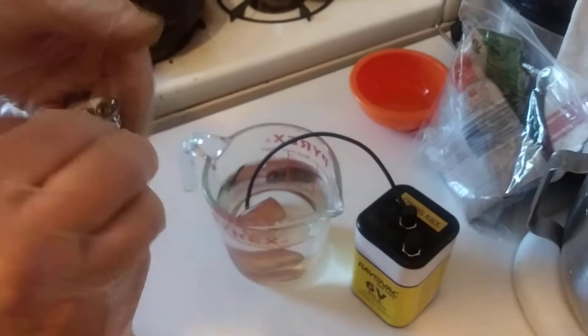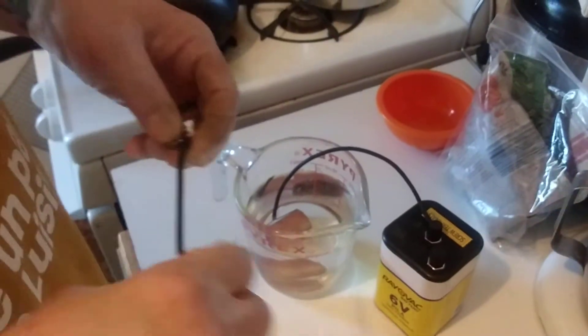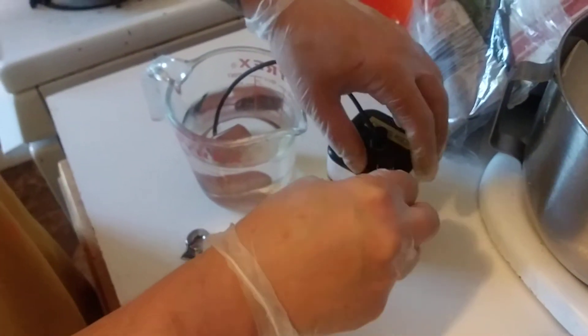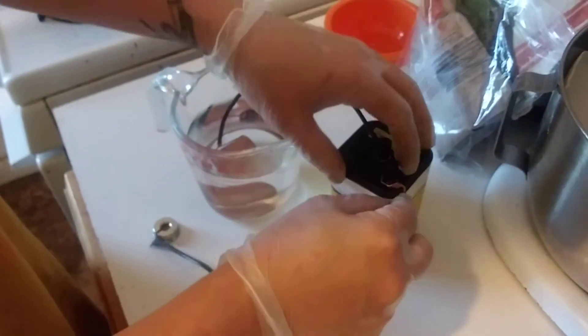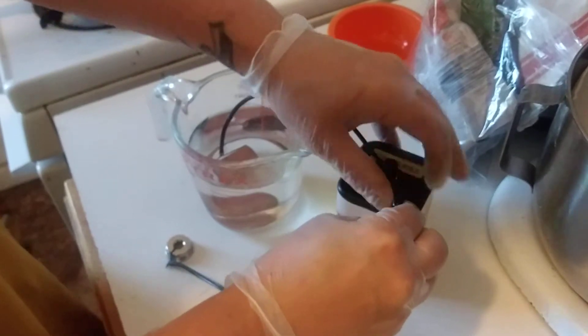Then we're going to put the part that we want to remove the chrome from and add that to the positive. So we go here to the positive, do a little hook there.